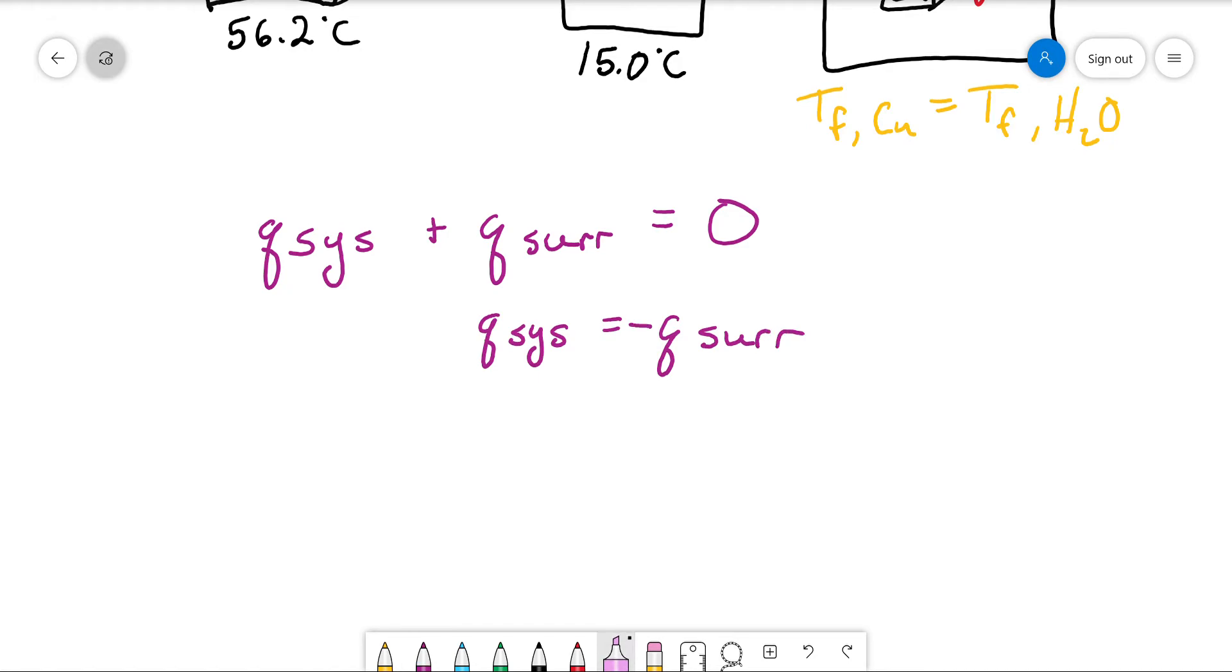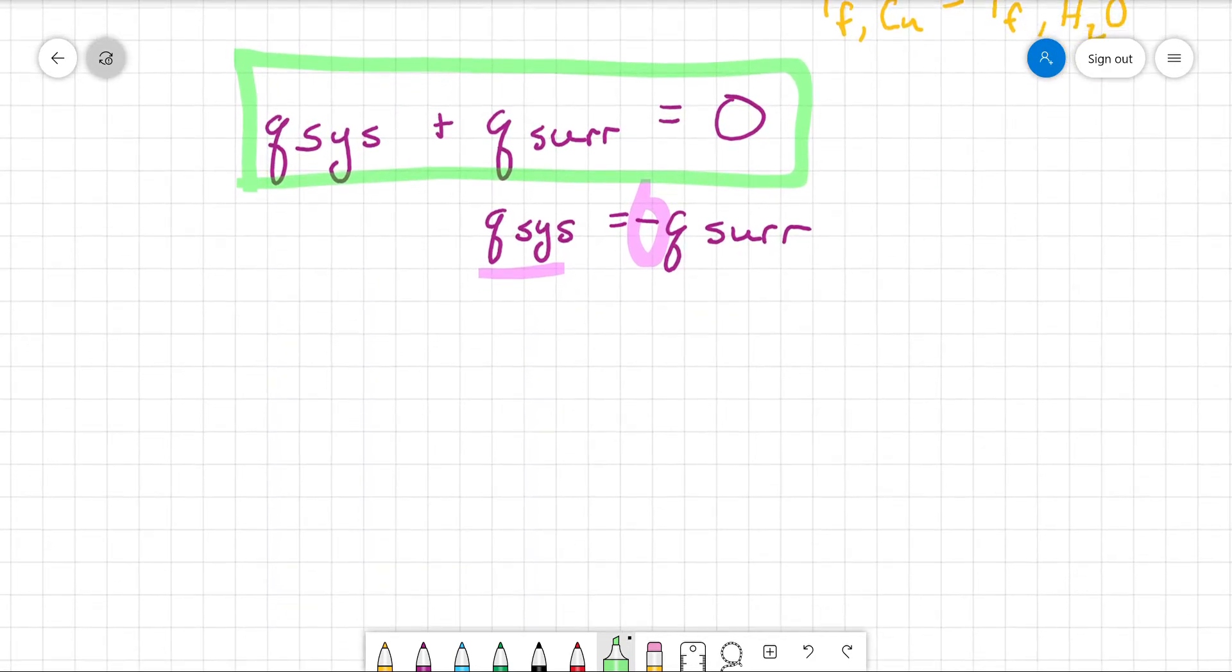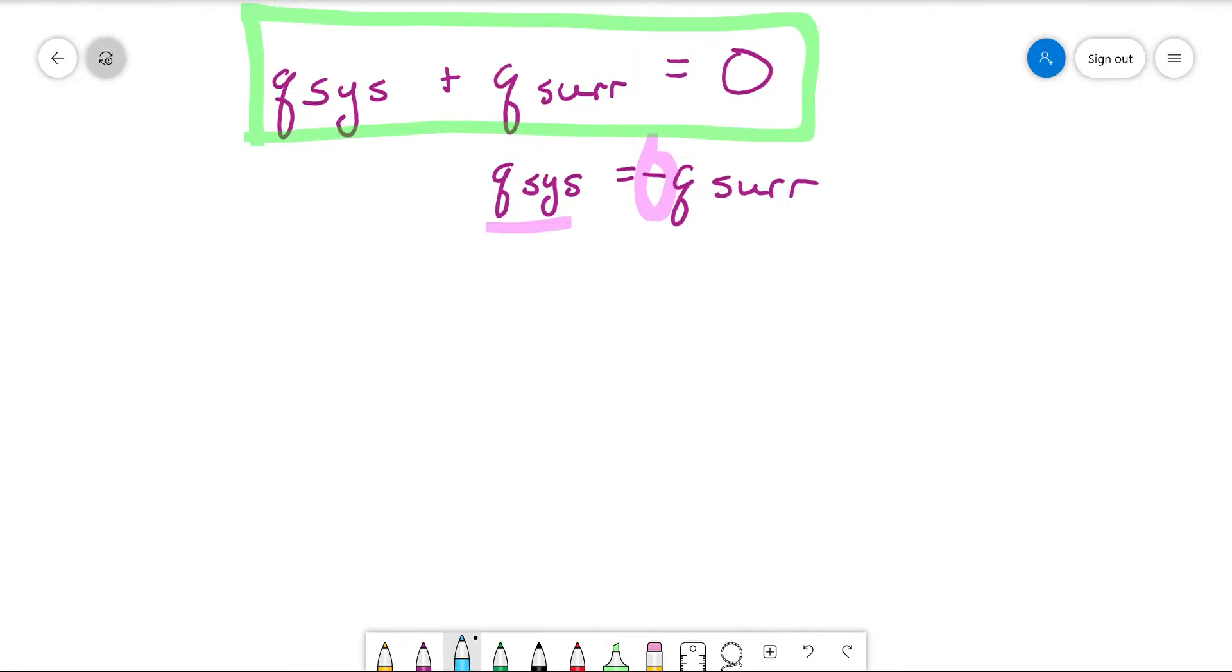Sometimes you will see this written, and actually most of the time, as q_system = -q_surroundings. And that's perfectly correct, but I find students get confused by that negative sign. Honest to God, you have a Q system, for some reason they can't find Q surroundings. You just slap the negative sign in front and everything's fine. So that's why I go with this equation. It says exactly the same thing. For whatever reason, it's just easier for everyone to deal with.